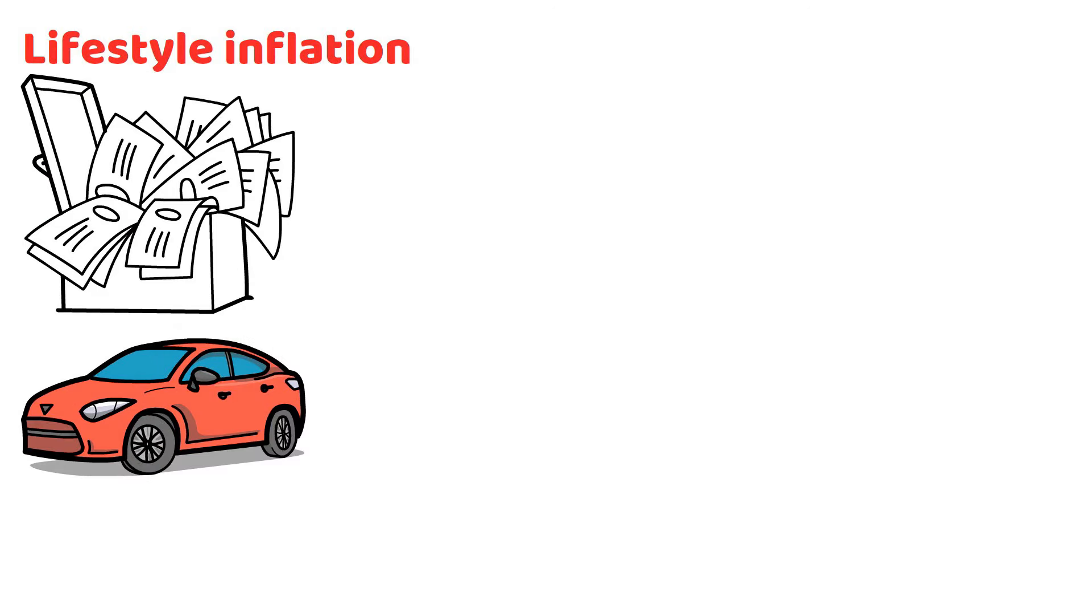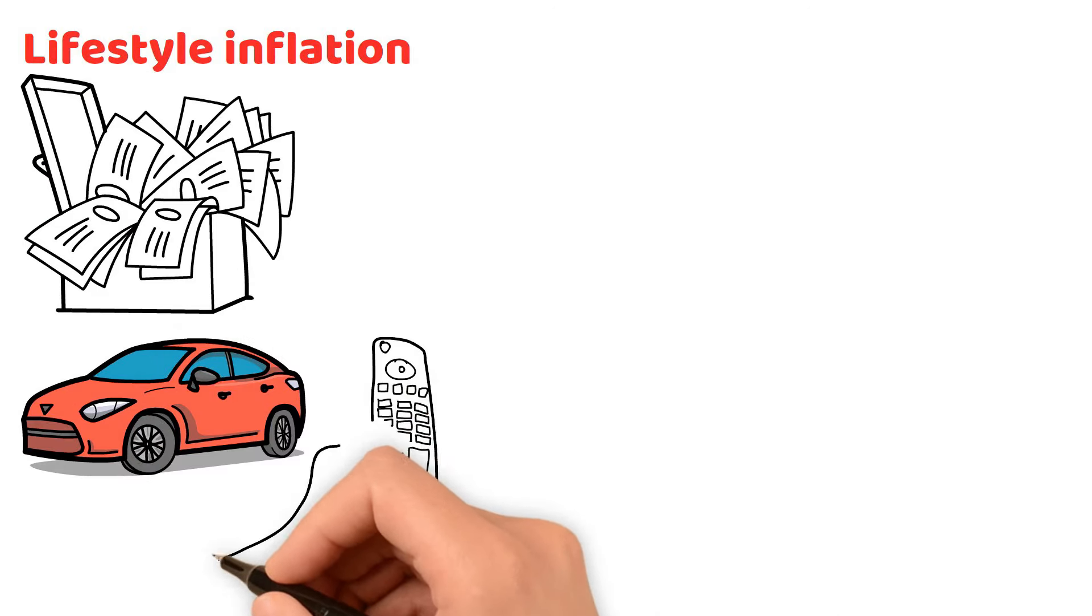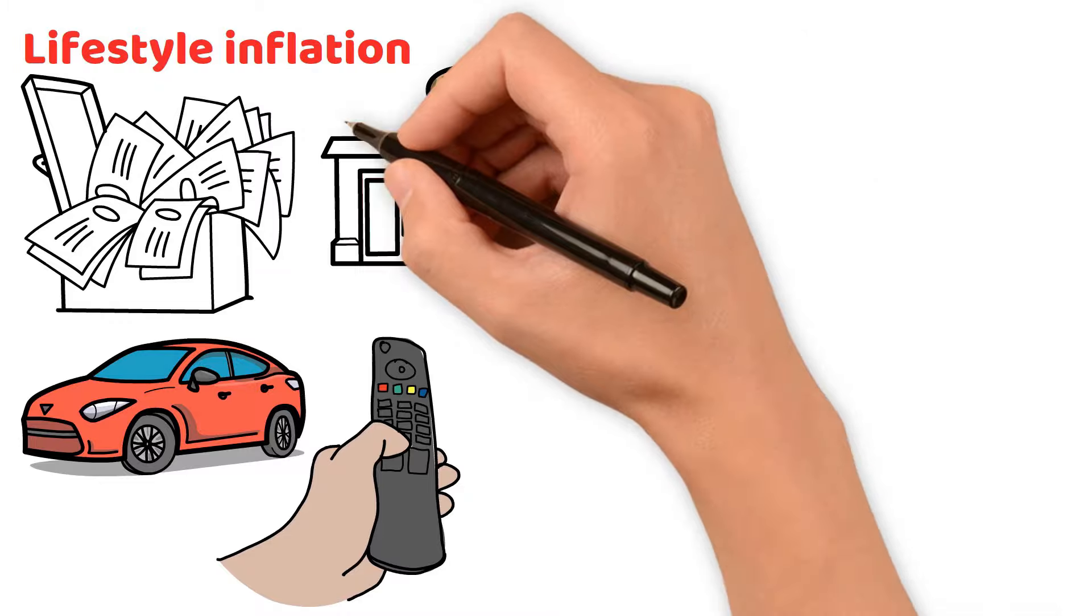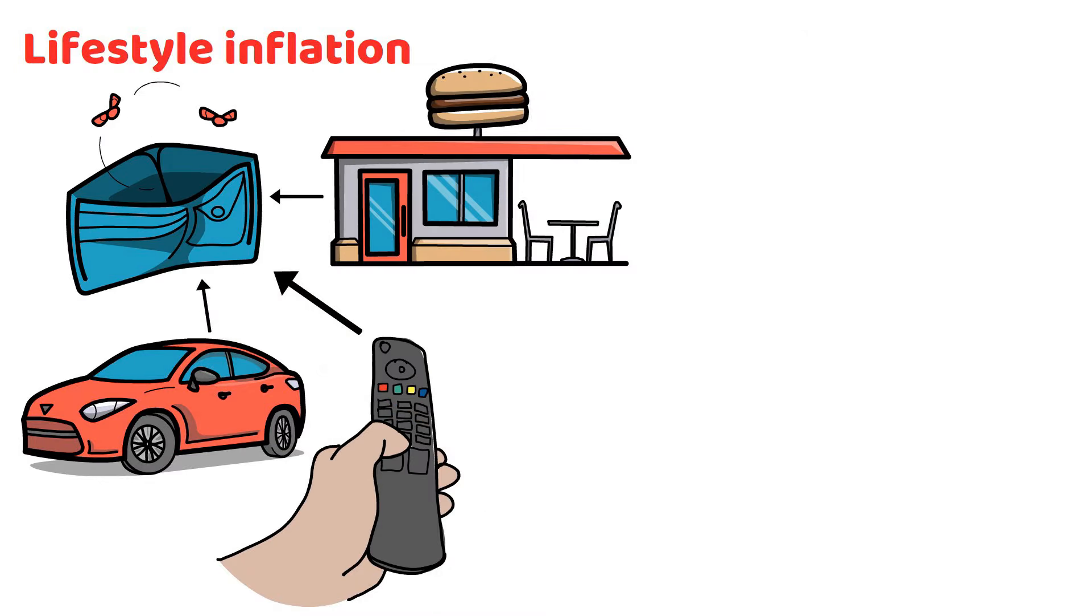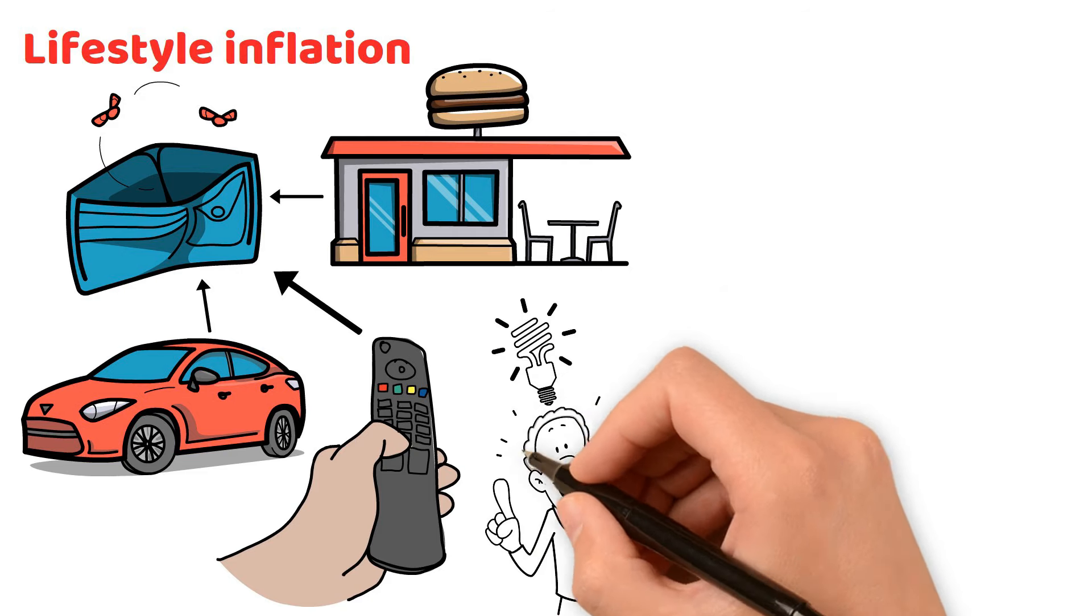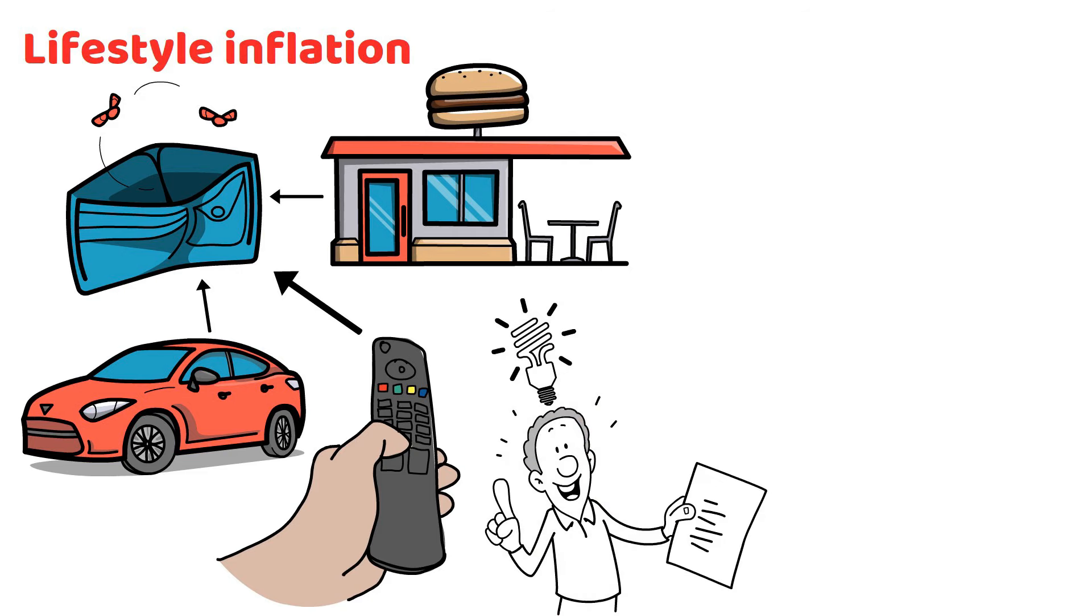Lifestyle inflation. As your income increases, it's easy to start spending more on things like a nicer car, more subscriptions, or dining out more frequently. These things can slowly eat away at the money you could be saving. To reach that first $10,000, you have to learn how to control this kind of spending.